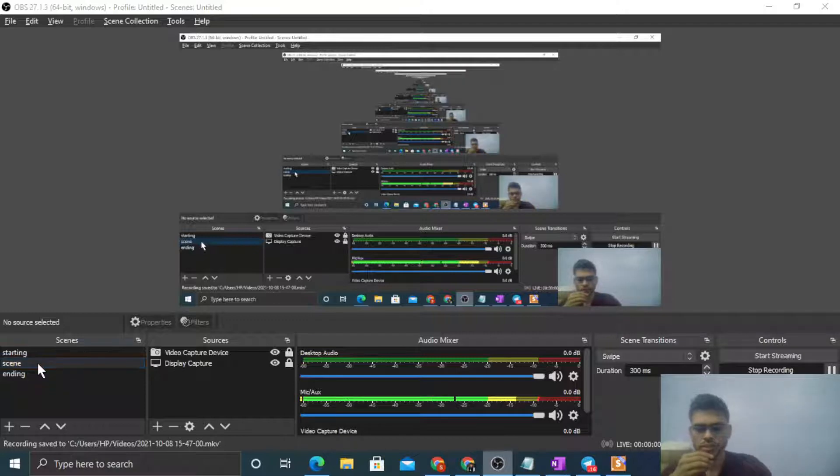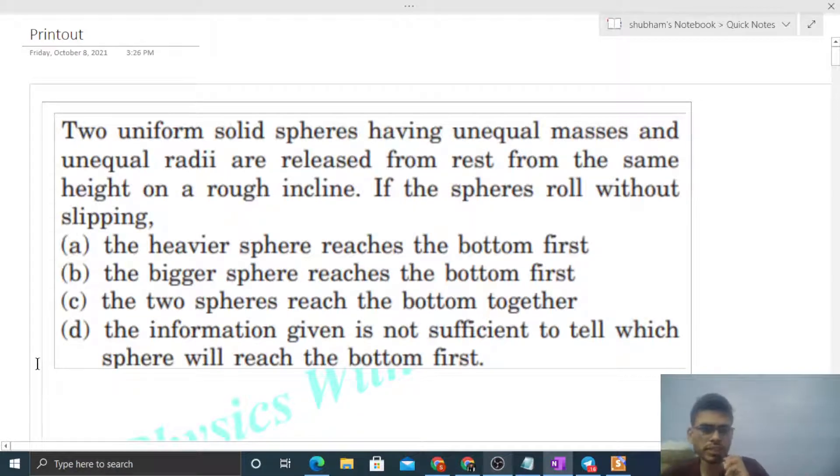Okay, hi everyone. Today let's discuss this interesting problem. It says two uniform solid spheres having unequal masses and unequal radii are released from rest from the same height on a rough incline. If the spheres roll without slipping...